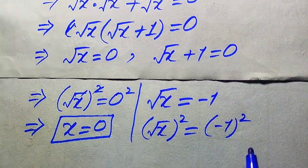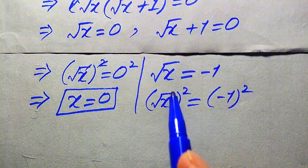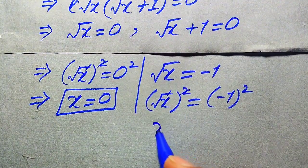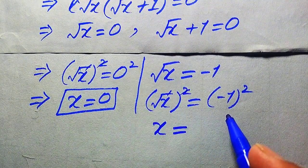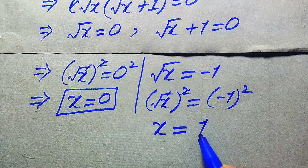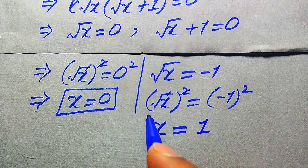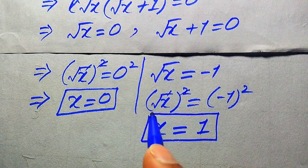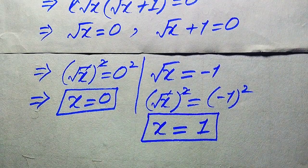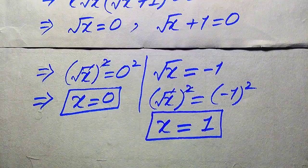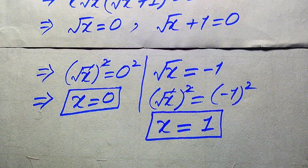For the second case, solving square root of X equals minus 1, squaring both sides gives X equals minus 1 squared, and minus 1 squared becomes plus 1. So X equals 1 is the second root of the given equation.